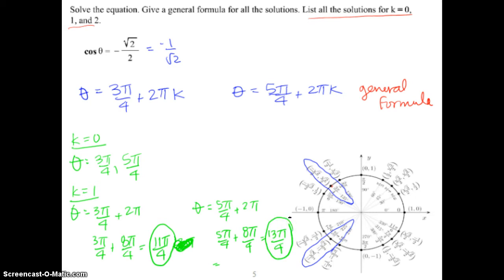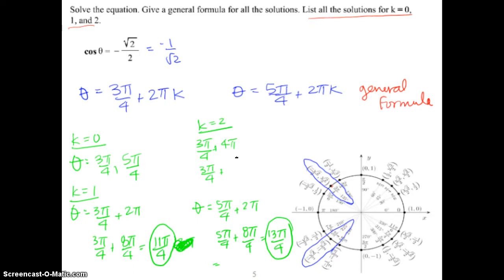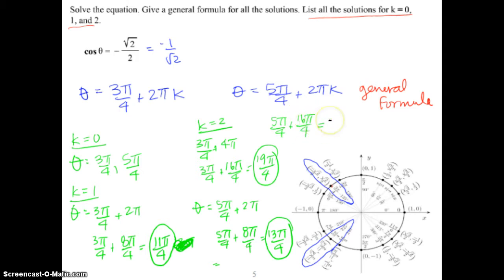Those are the theta values when k equals 1. When k equals 2, it's 3π/4 plus 2π times 2, which equals 4π, so 3π/4 plus 16π/4 gives 19π/4. And 5π/4 plus 16π/4 equals 21π/4. So those are our solutions for k equals 0, 1, and 2. It gets a bit tedious, but it's pretty straightforward — just a matter of keeping the numbers straight.